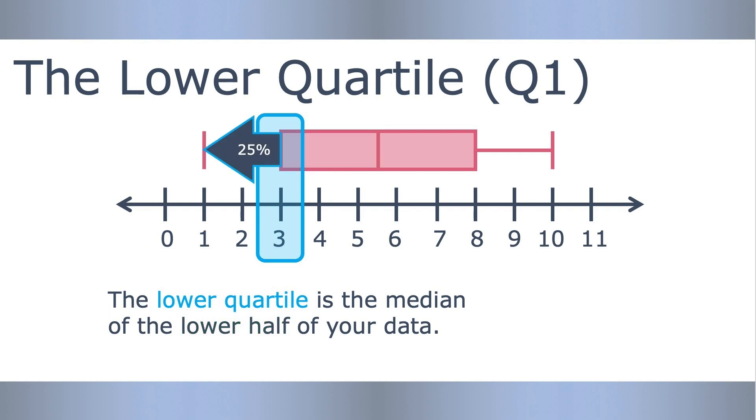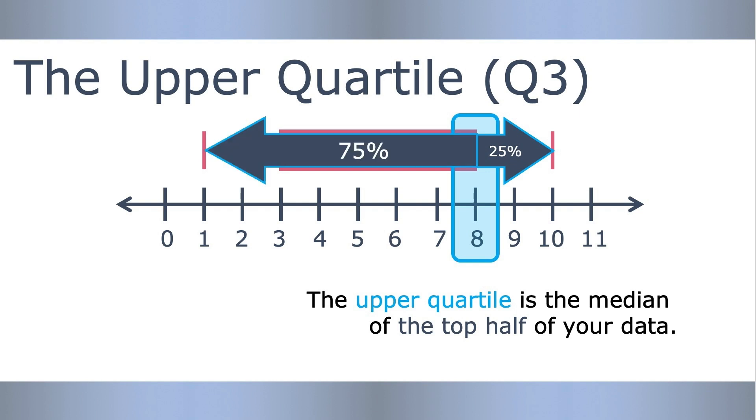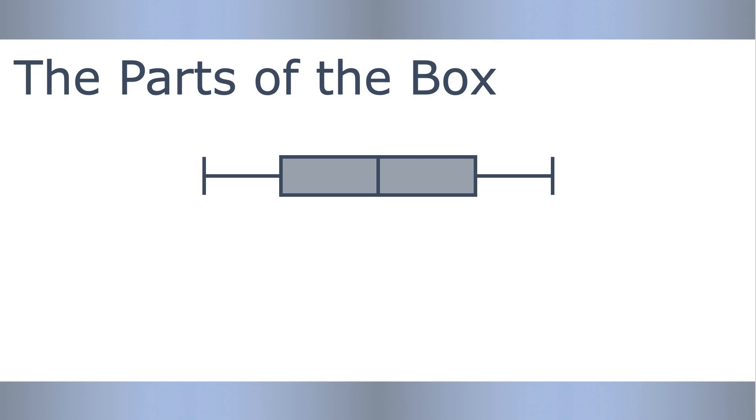The upper quartile, often called Q3, is the median of the upper half of your data. That means one quarter or 25% of the data is above this value and 75% of the data is below. Let's take another look at this box plot.